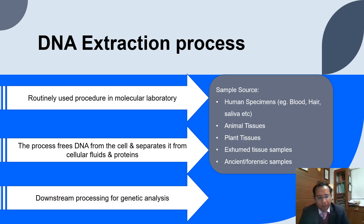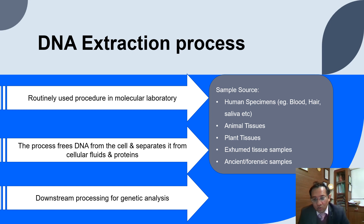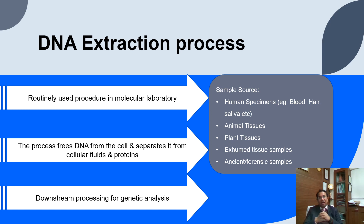The sample source can be various — human specimens like blood, hair, saliva, semen, animal tissue, plant tissues, exhumed tissue samples, ancient or forensic samples. In a hospital-based setting we also use FFPE blocks — formalin-fixed paraffin-embedded blocks — as well as placenta and amniotic fluid, which help in pre-implantation genetic analysis. Basically, any cell that contains DNA can have its DNA extracted and used for downstream application.